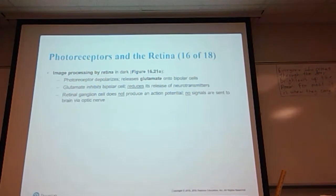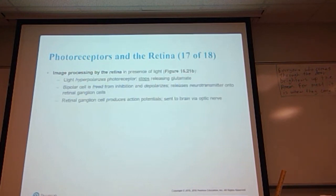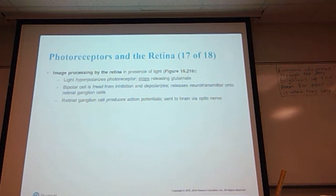Photoreceptors depolarize in the dark, which releases glutamate onto bipolar cells. The glutamate inhibits the bipolar cell, which reduces the release of neurotransmitters. The retinal ganglion cell does not produce an action potential, so no signals are sent to the brain via the optic nerve. However, in light, the photoreceptor hyperpolarizes and stops releasing glutamate. The bipolar cell is free from inhibition and depolarizes, releasing neurotransmitters onto the retinal ganglion cells. Those retinal ganglion cells then produce action potentials, which send the message to the brain via the optic nerve.